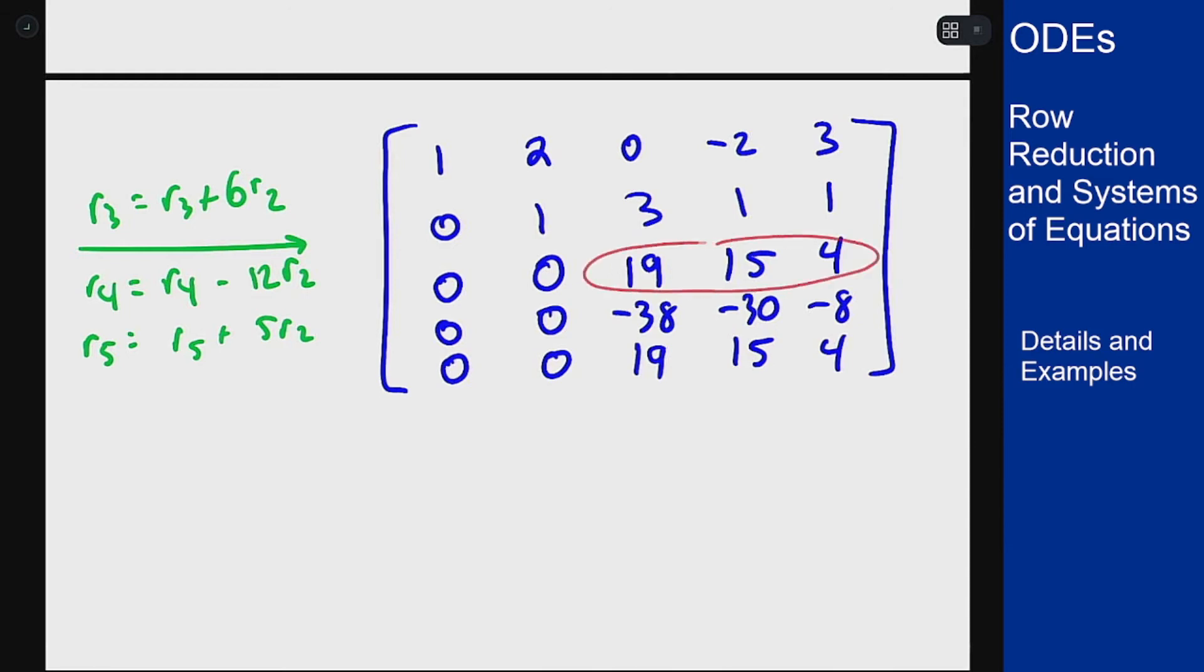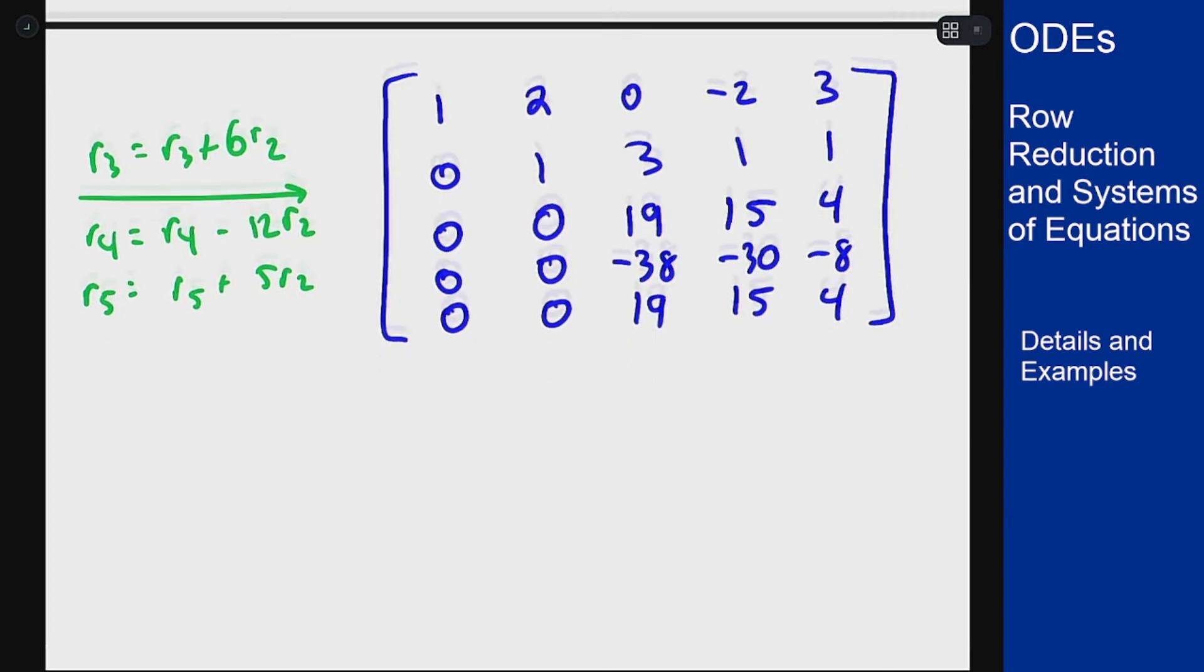rows 3 and 5 are identical and row 4 is just negative 2 times row 3. So I can do these operations before I put a 1 in that spot if it makes things look more convenient. Usually you'll want to reduce to a 1. But in this case, I can do a shortcut step